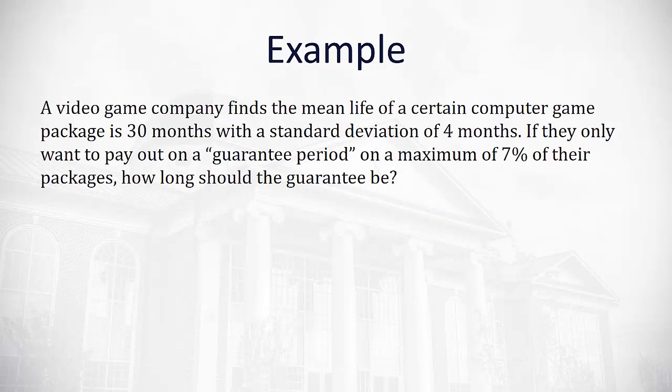For example, a video game company finds the mean life of their computer game package is about 30 months with the standard deviation of 4 months. They want to put a guarantee on their video game package, but they don't want the guarantee period to be too long or too short. They want it to be of value to their customers, but not cost them too much money. And so they decide they want to pay out on 7% of their packages.